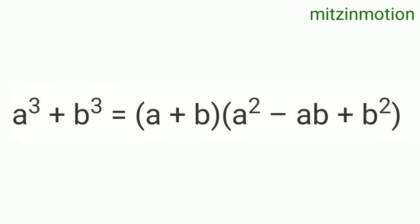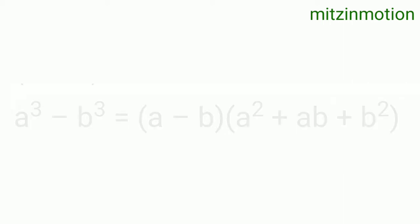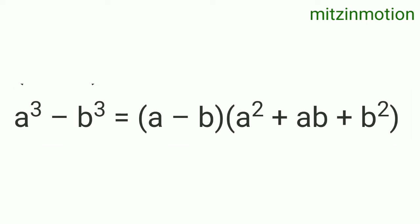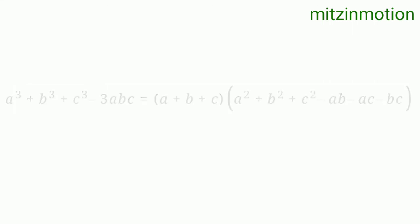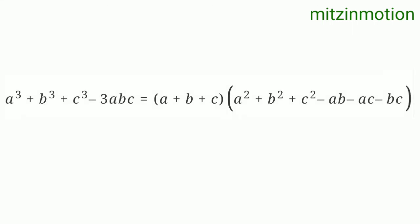Next formula: a³ + b³ = (a + b)(a² - ab + b²). The next is a³ - b³ = (a - b)(a² + ab + b²). This is the longest formula of this video.